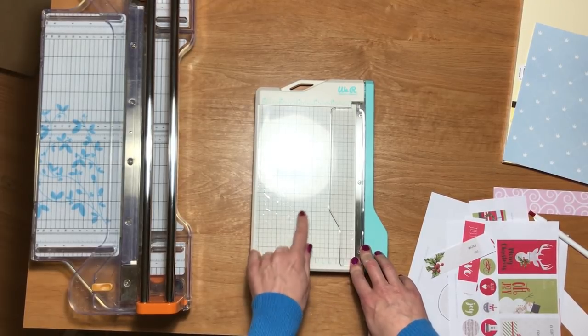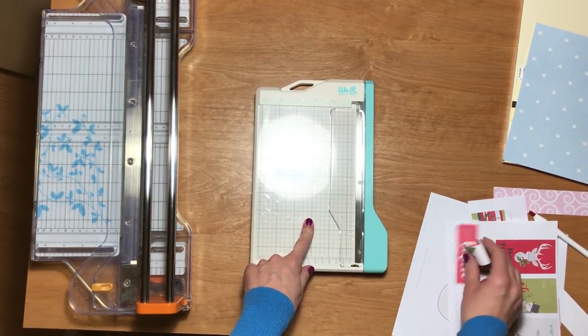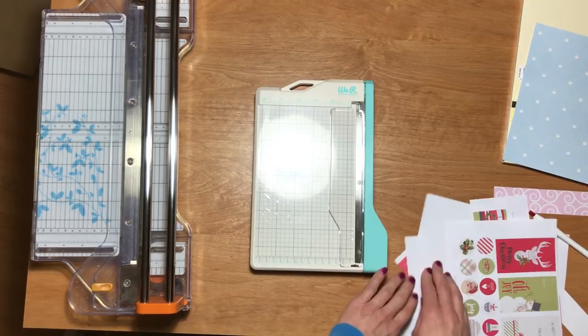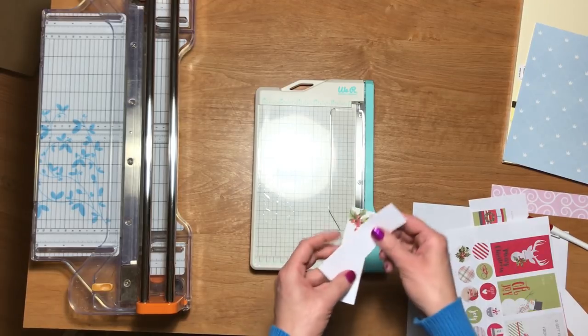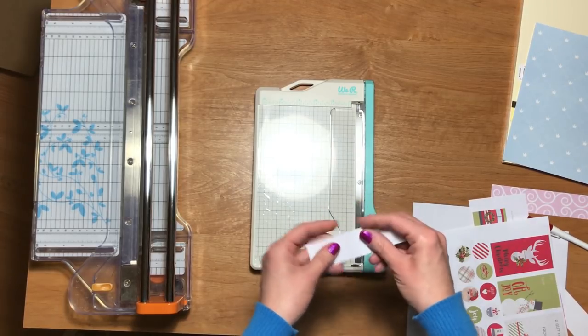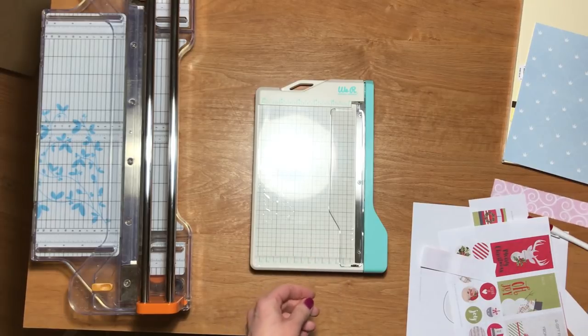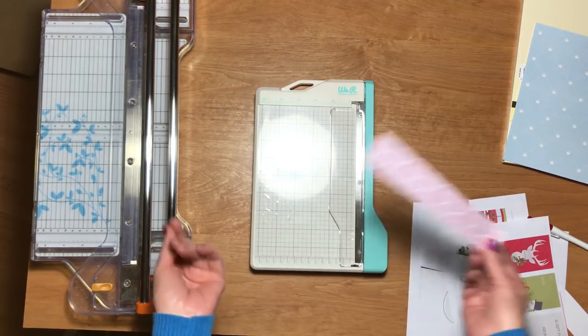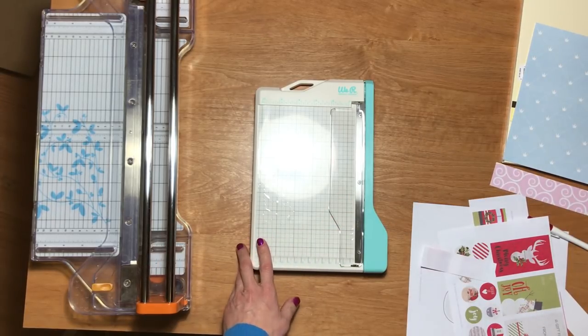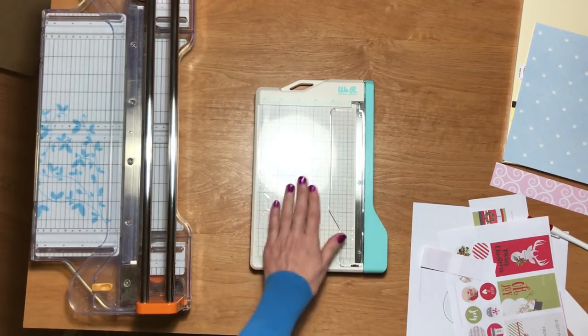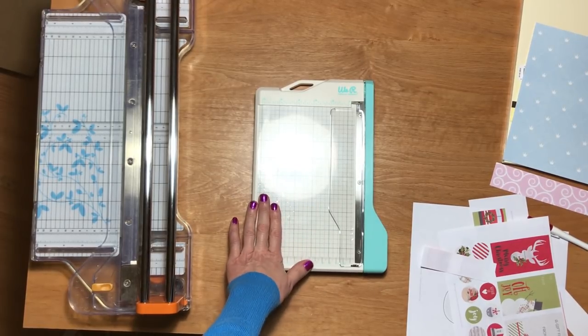It will cut three sheets at a time, so if you had three of these, it would cut right through each of them all at one time. Like I said, it was cutting 110 pound cardstock with no problem. This is definitely easier to have on the desk, takes up minimal space, and is great for travel.